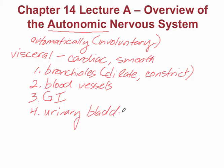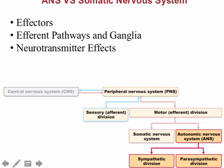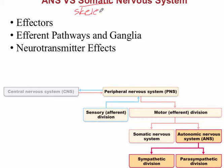Some of the most important parts of this system are the effectors, the efferent pathways, and the ganglia and neurotransmitter effects. The effectors are the tissue specifically activated. In contrast to the somatic nervous system, which innervates skeletal muscle voluntarily, the autonomic nervous system is involuntary — so its effectors are cardiac muscle and smooth muscle, like the examples from the previous slide.